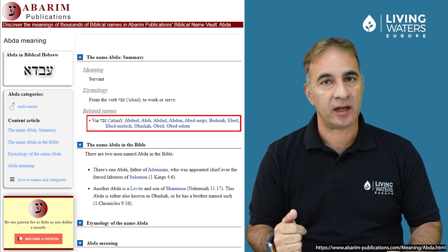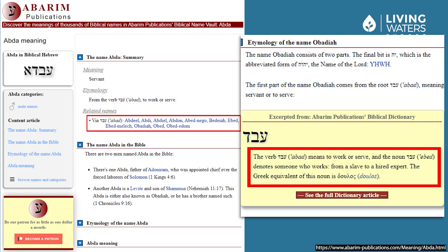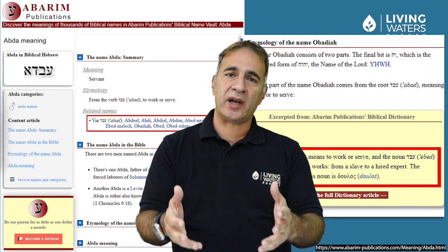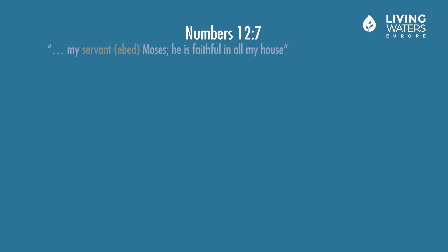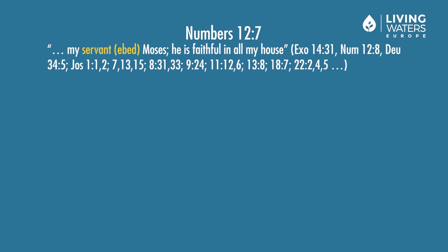According to this website, the verb abad means to work or serve, and the noun abed — the actual word used in the Bible for both Hebrew and foreign slaves — denotes someone who works, from a slave to a hired expert. The Greek equivalent of this noun is doulos. So it seems the word abed can mean a hired expert, which has nothing to do with our modern understanding of the word slave. In fact, abed was given as an honorable title to Moses in Numbers chapter 12 verse 7: 'My servant Moses — abed — he is faithful in all my house.' This sounds like a positive and honoring title, and it is used in many other places for Moses as a title of respect.